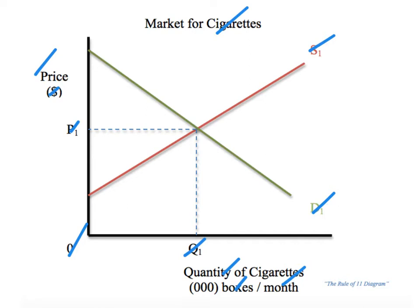So even before you get into the question itself — you see 'microeconomics tax diagram' — boom, Rule of 11, go at it, draw this graph. Then you know you're starting with the correct diagram to manipulate after the event. In this case, the event is going to be an indirect tax.